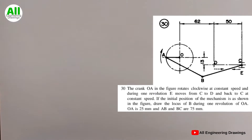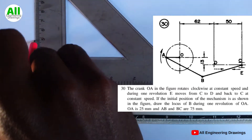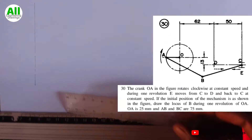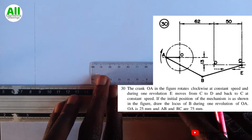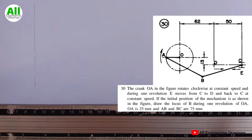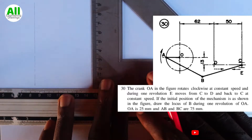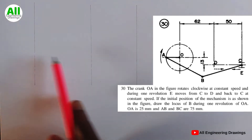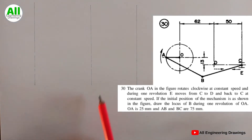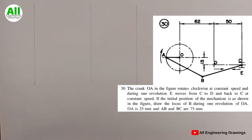We'll start the question by replicating the figure above. The distance between this line and this line according to the figure above is 62 mm, and the distance between this line and this line is 50 mm. Next I will draw a circle of radius 25 mm here, because the question says AO is 25 mm.